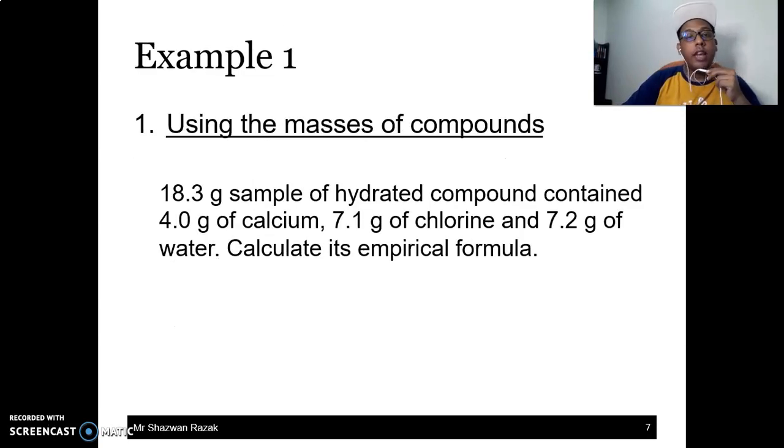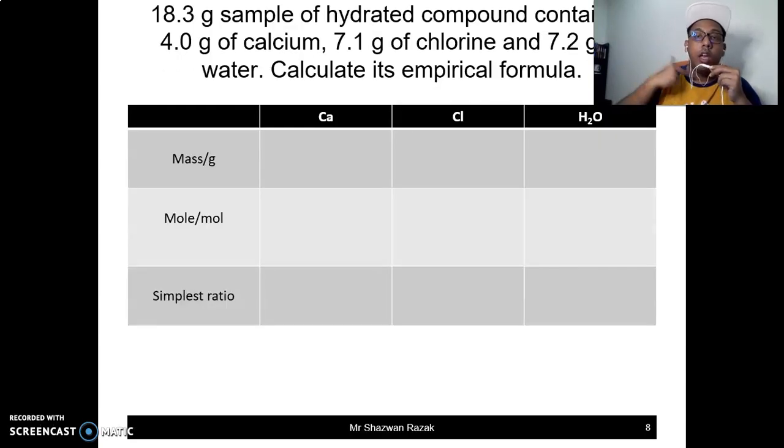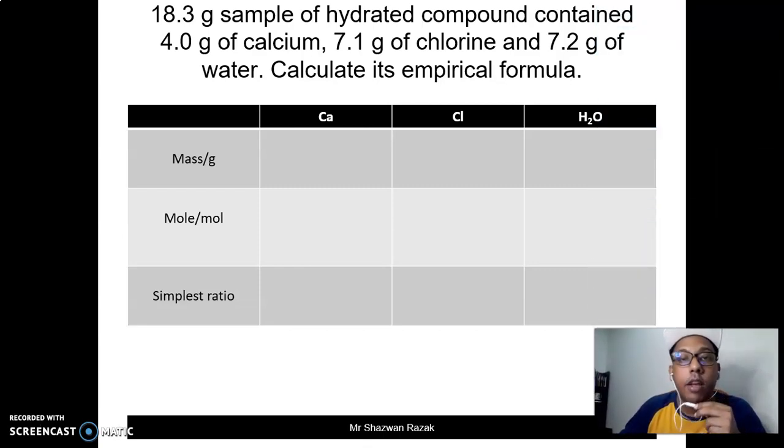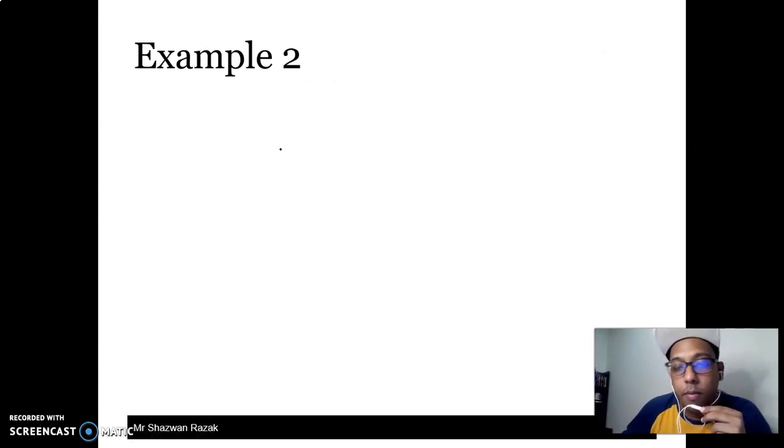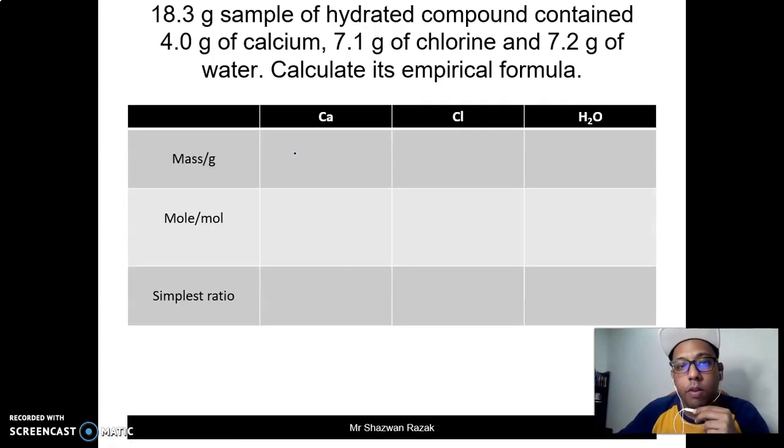So have a look at the first example. We were given 18.3 gram of hydrated compound containing 4.0 gram of calcium, 7.1 gram of chlorine, and 7.2 gram of water. We were asked to calculate its empirical formula. So apa yang kita buat di sini adalah, this is the question. Apa yang kita buat di sini adalah, kita akan cuba untuk kira dia punya empirical formula. We know that we have 4.0 gram of carbon, sorry calcium, 7.1 gram of chlorine, and 7.2 gram of water.